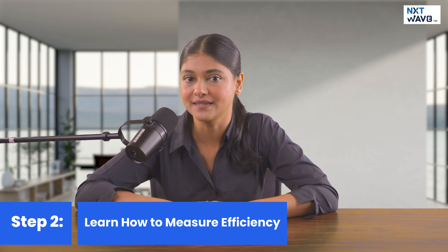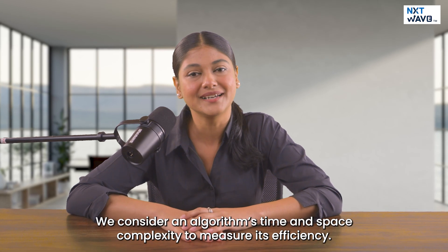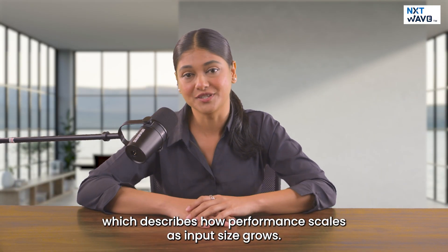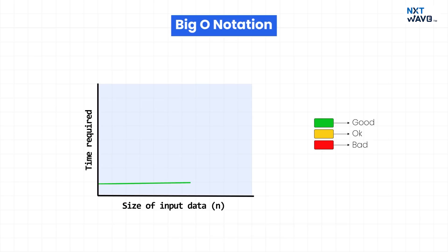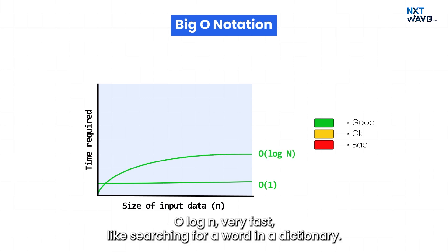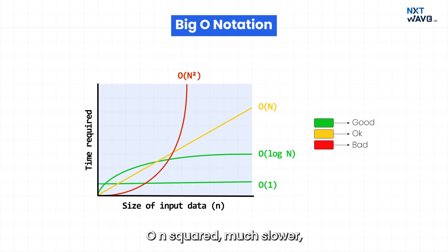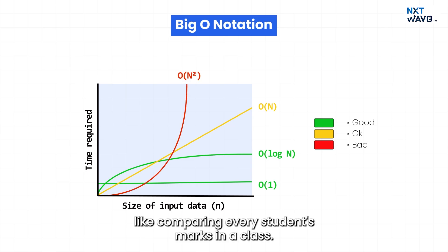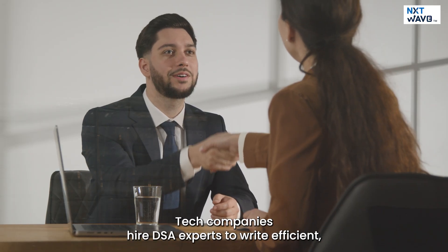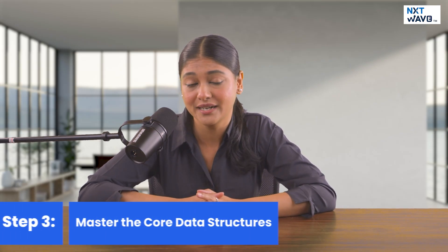Step two: learn how to measure efficiency. Have you ever abandoned a website because it took forever to load? That happens due to inefficient code. We consider an algorithm's time and space complexity to measure its efficiency, both expressed using Big O notation, which describes how performance scales as input size grows. O(1) — fastest, like turning on a switch. O(log n) — very fast, like searching for a word in a dictionary. O(n) — slower, like checking every name in a guest list. O(n²) — much slower, like comparing every student's marks in a class. O(2^n) — nightmare mode, like doubling your work at every step. Tech companies hire DSA experts to write efficient, optimized code that runs lightning fast.